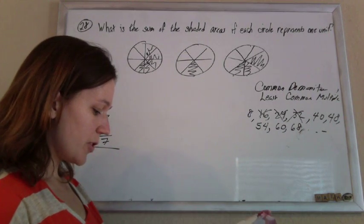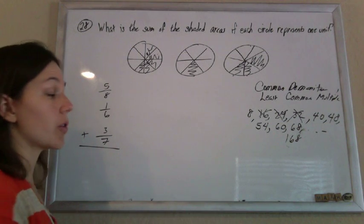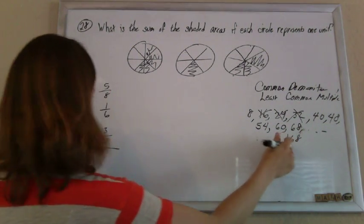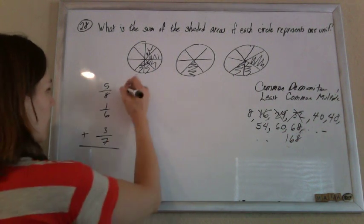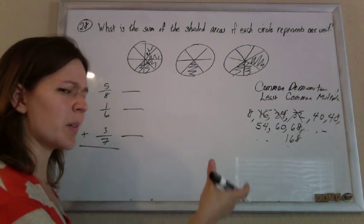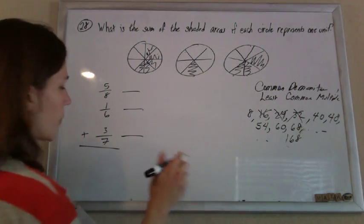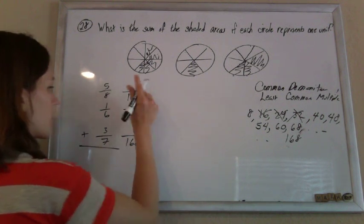So you keep going, and then you get up to 168, and that is divisible by everything: 8, 6, and 7. And I'll show you a couple other ways if you don't want to go out that far, because that was kind of a pain, right? We found out that our common denominator was 168.